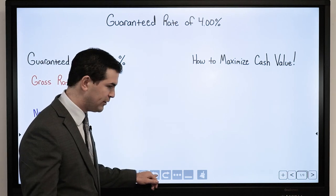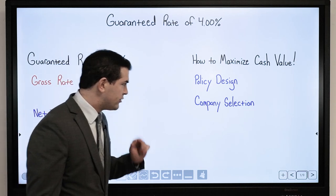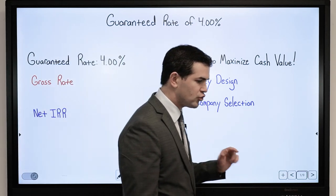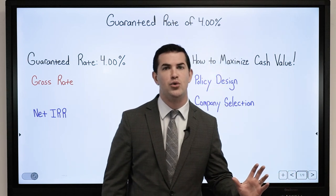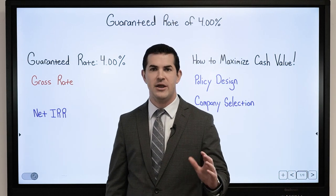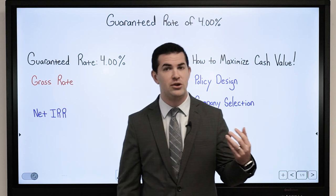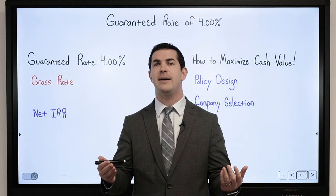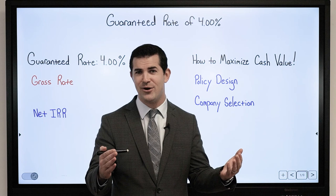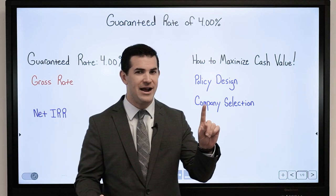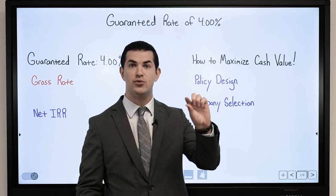In any environment, we're going to focus on the guarantees. Here are the two elements that are going to drive the cash value north as much as possible. The first is policy design — we frequently talk about this. When I design a policy, I can actually choose where my money goes. If I have $1, I can choose what percentage of that goes toward the insurance premium.